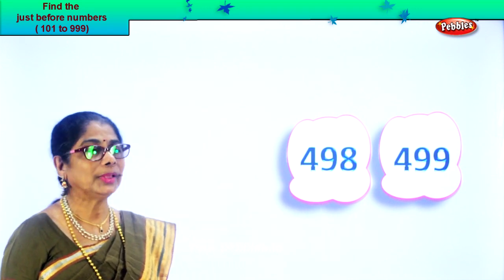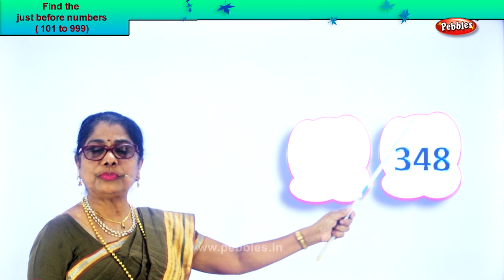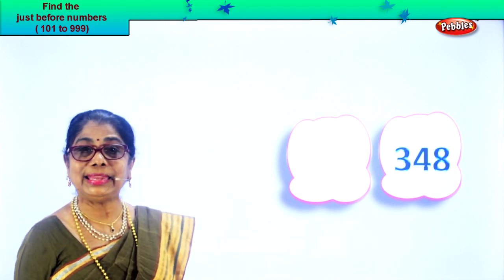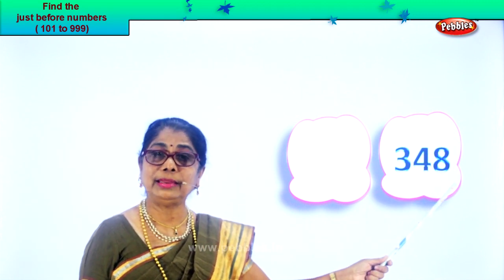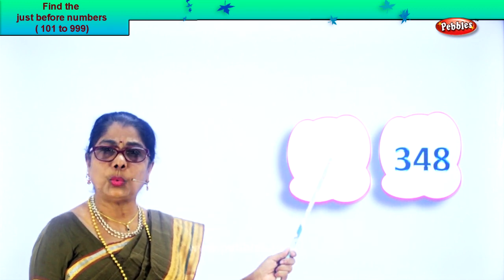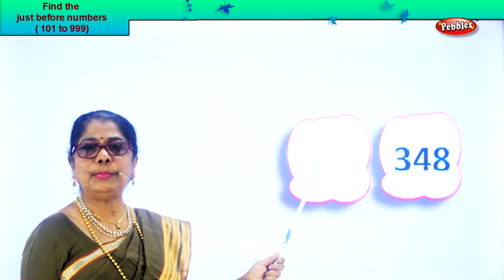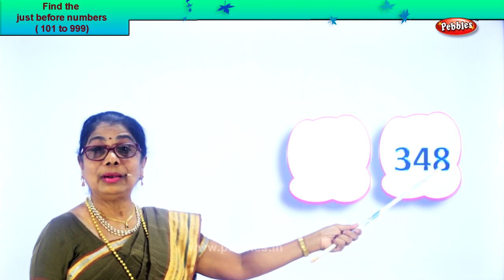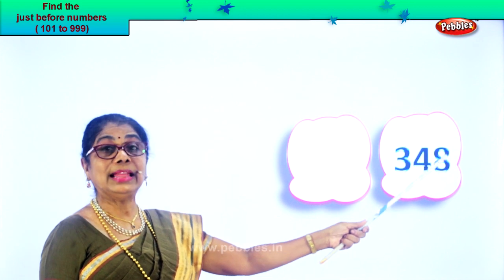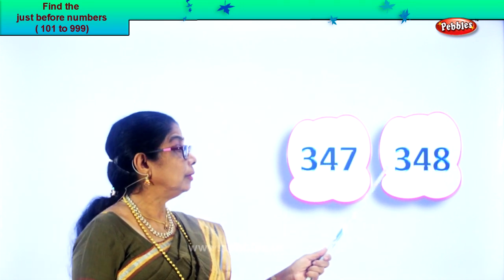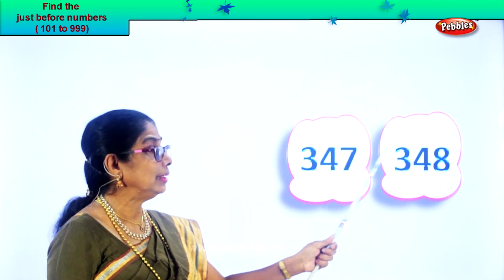Let's take the next number. In the ones place you have eight, tens place four, and hundreds place three. So we read the numeral 348 — three hundred and forty-eight. We are looking for the number before. In the ones place you have eight, one less. The number before will be one less than eight. What is one less than eight? Seven. So we'll have 347 — that'll be the number before 348. 347, 348.